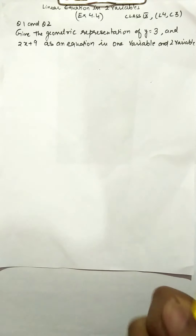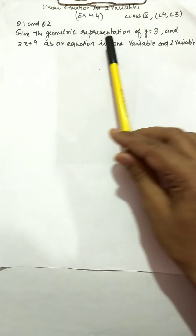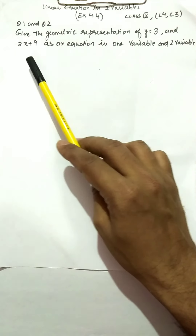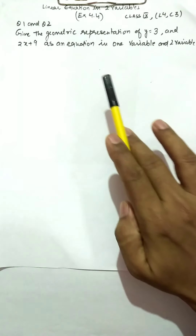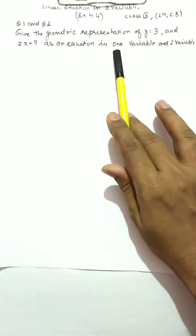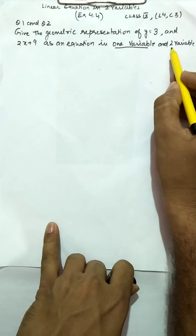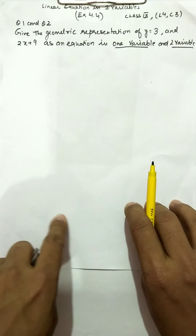Today we will be discussing Exercise 4.4. Questions 1 and 2 are of similar type; only the equations are different. In the first question the equation is y = 3, and in the second question the equation is 2x + 9. We have to represent them geometrically as an equation in one variable and in two variables. We will discuss both equations first in one variable.